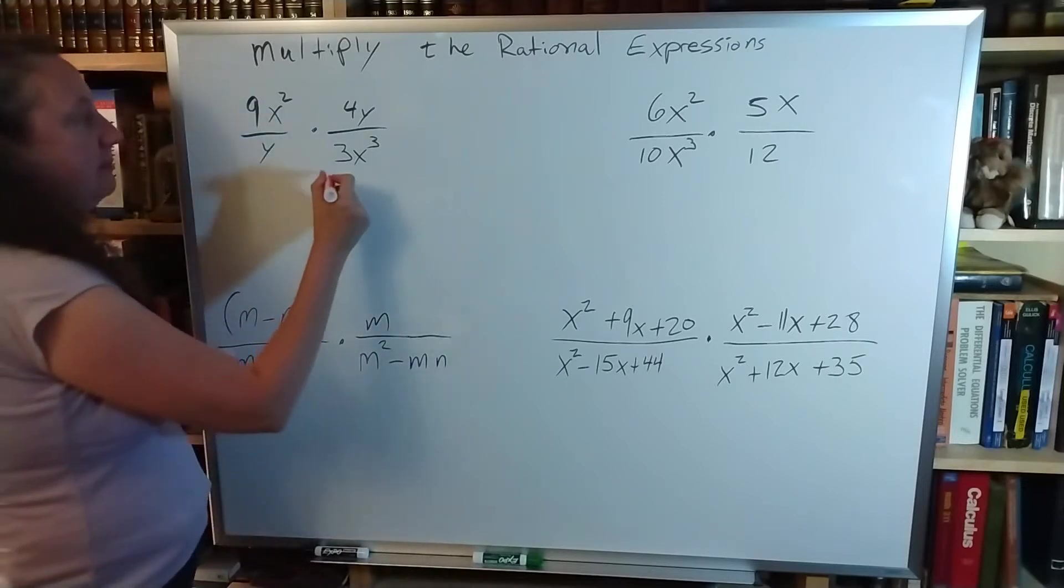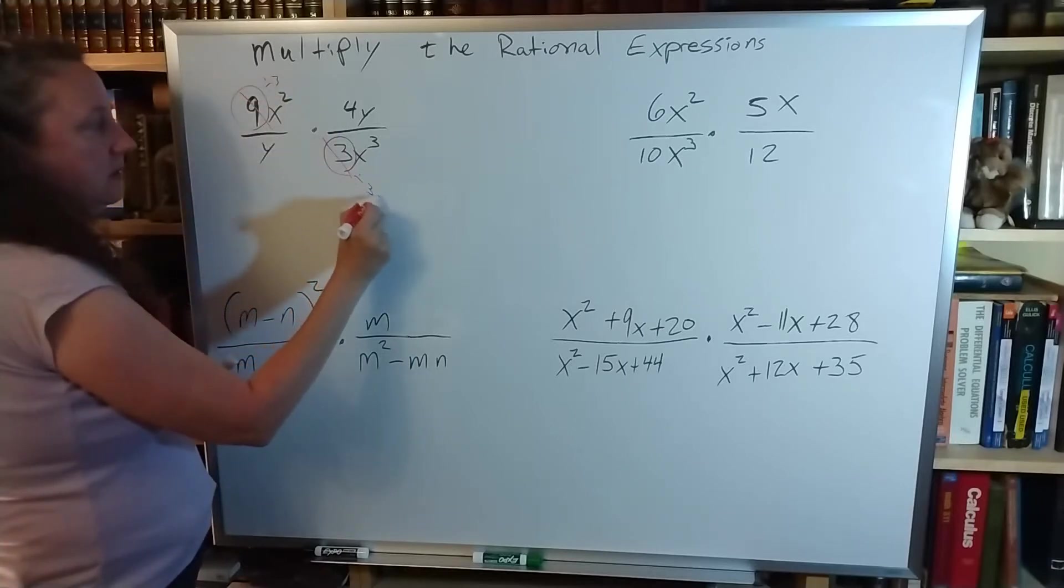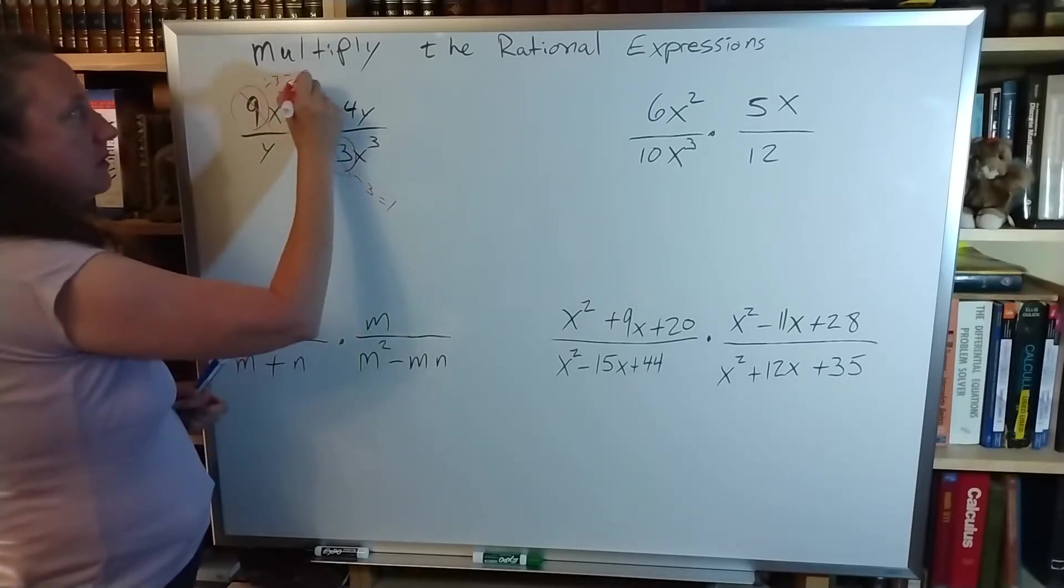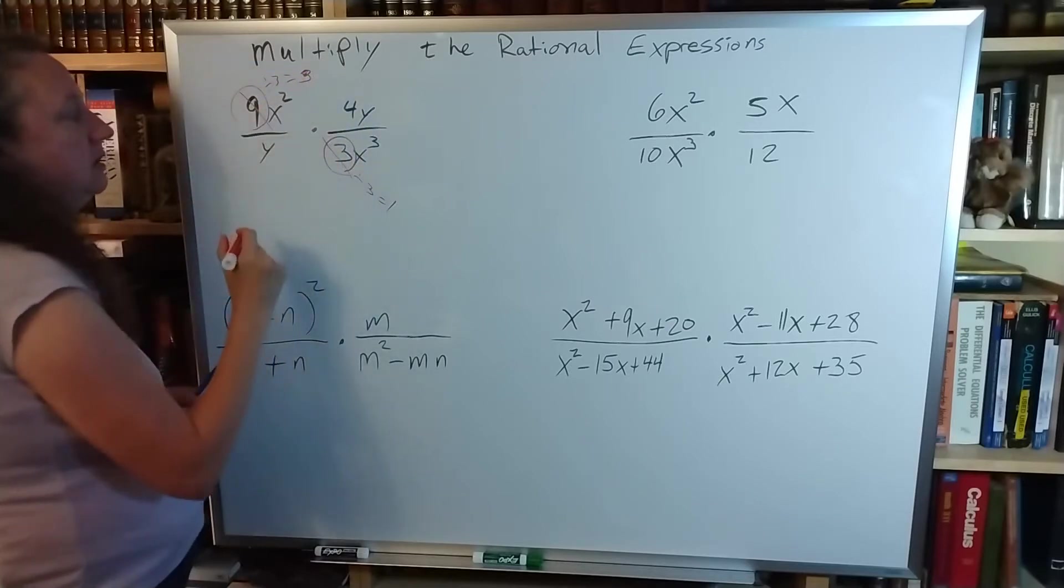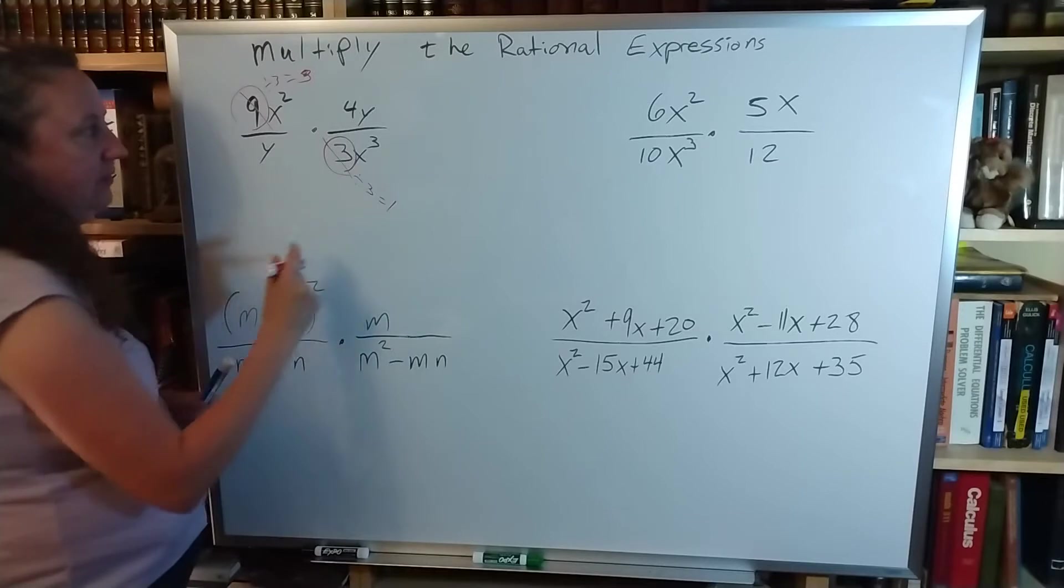I'm going to take my 9 and my 3, and I'm going to divide each one of them by 3. So this is being replaced by a 3, this is being replaced by a 1.